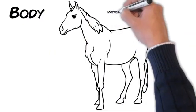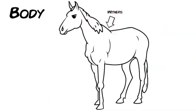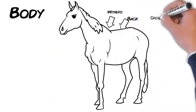Now we move on to the body of the horse: withers, the hump at the end of the mane, back, croup, shoulder, and barrel.